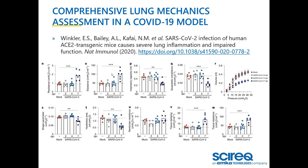Recently published in Nature Immunology, the study by Winkler et al. provides an excellent example of the comprehensive lung mechanics assessments that can be made using the FLEX event. Briefly, in this study, subjects were infected and lung mechanics were assessed at days 2, 4, and 7 post-infection, along with assessments of histopathology, cellular infiltrates, transcriptional profiles, and cytokine and chemokine endpoints.